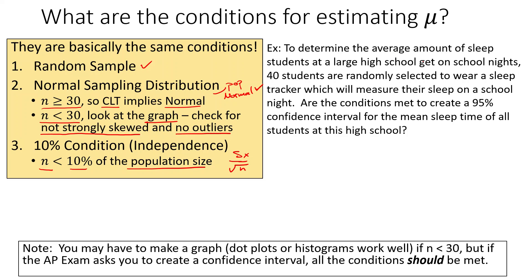Let's look at this example: to determine the average amount of sleep students at a large high school get on school nights, 40 students are randomly selected to wear a sleep tracker. Are the conditions met to create a 95 percent confidence interval for the mean sleep time of all students at the high school? Condition one — do we have a random sample? Yes, a random sample is stated in the problem.